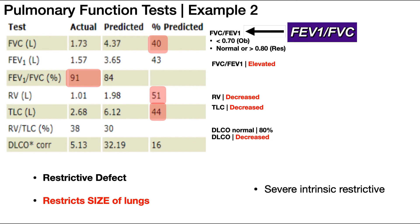In this video we're going to do two examples of pulmonary function tests and we're going to be able to figure out whether or not the given condition is a restrictive pulmonary defect or an obstructive pulmonary defect.